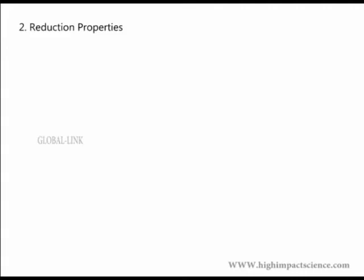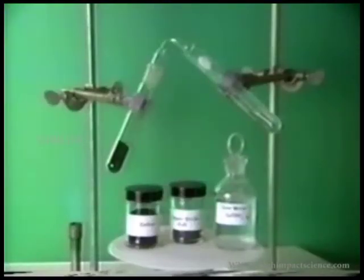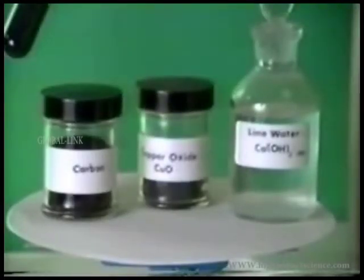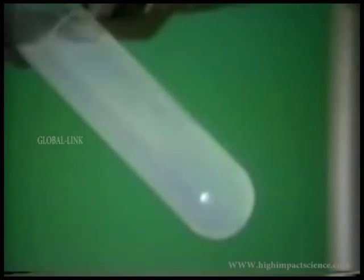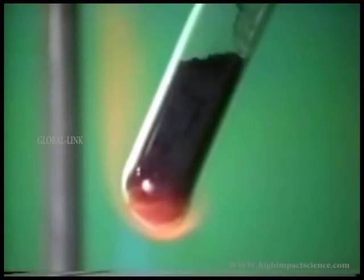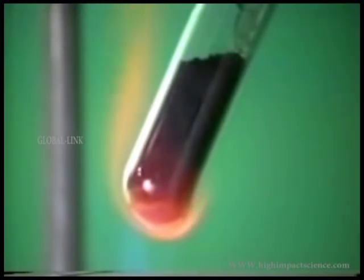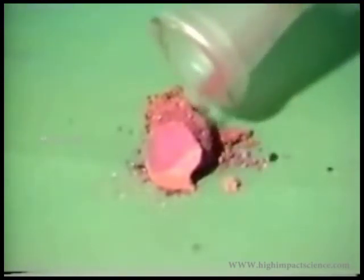Reduction properties of carbon. In this experiment, we heat together a mixture of black carbon powder and black copper(II) oxide. The gas evolved is passed into a solution of calcium hydroxide, or lime water. We notice the white precipitate of calcium carbonate formed as the gas is bubbled in the lime water. This means that the gas is carbon dioxide. As the black mixture is heated, the copper(II) oxide is reduced to reddish brown copper by carbon, which is itself being oxidized to carbon dioxide. After the tube has cooled, we can see the copper that has been formed at the bottom of the tube. When we pour the mixture at the end of the experiment, we can see that it is now red-brown due to the presence of copper.